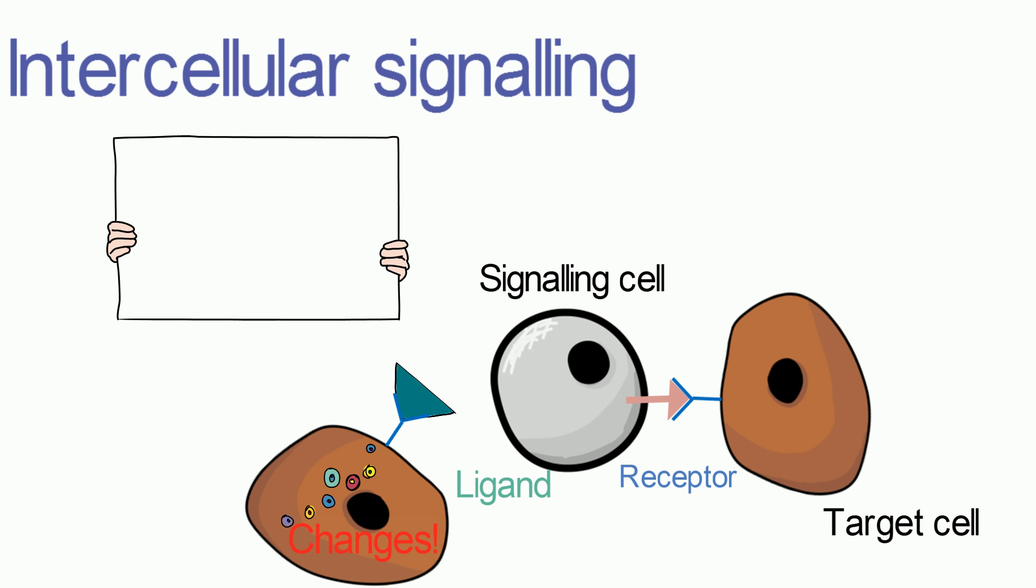Intercellular signaling can be categorized into five types: contact-dependent, paracrine, autocrine, synaptic, and endocrine signaling.